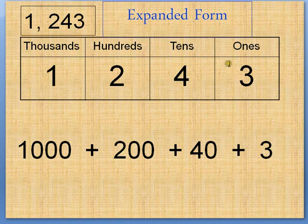So, one thousand, two hundred, forty-three is one thousand plus two hundred plus forty-three. So expanded form is like a long addition expression. It's not an addition sentence because they don't have an equal sign at the end of it.